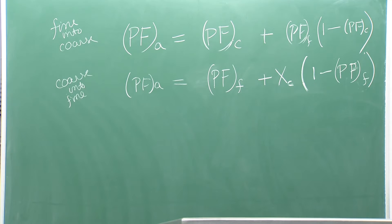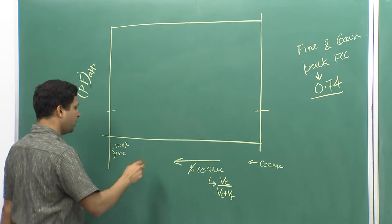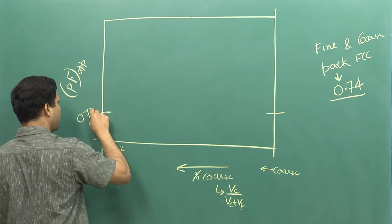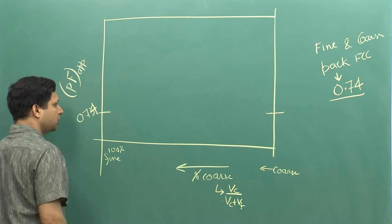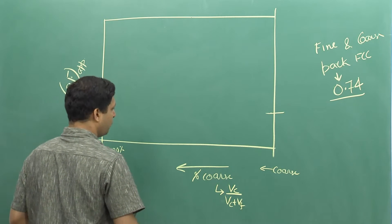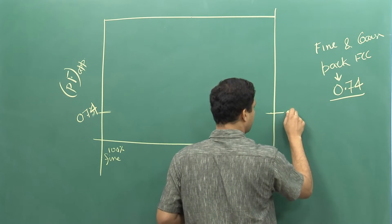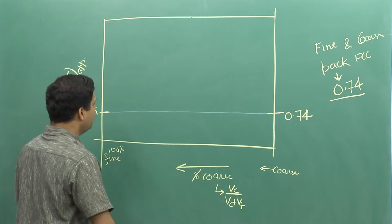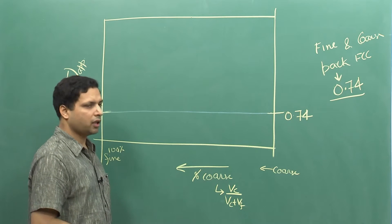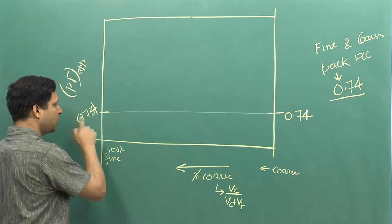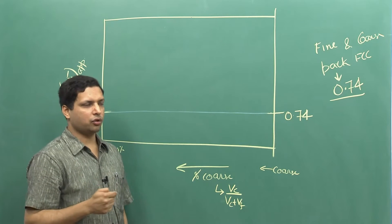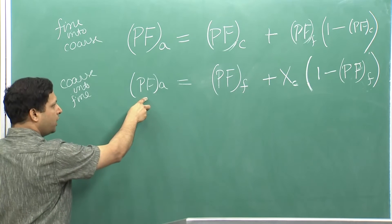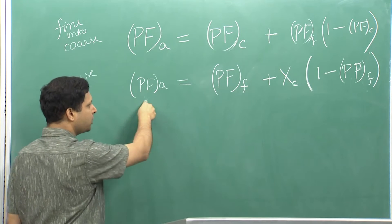In the equation we have xc, which is Vc divided by Vt, so it is slightly different. When we have only fine particles, you get a packing fraction of 0.74, and at the other extreme with only coarse particles, it is also 0.74. When adding coarse into fine or fine into coarse at the optimal condition, you reach a maximum of 0.932. Both extremes converge to the same structure at the maximum.